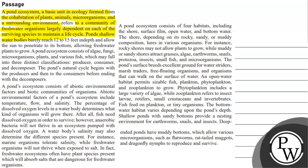Ponds are shallow water bodies that barely reach 12 to 15 feet in depth and allow the sun to penetrate to its bottom, allowing freshwater plants to grow. A pond ecosystem consists of algae, fungi, microorganisms, plants, and various fish, which may fall into three distinct classifications: producer, consumer, and decomposer. The pond's natural cycle begins with the producers, then the consumers, before ending with the decomposers.